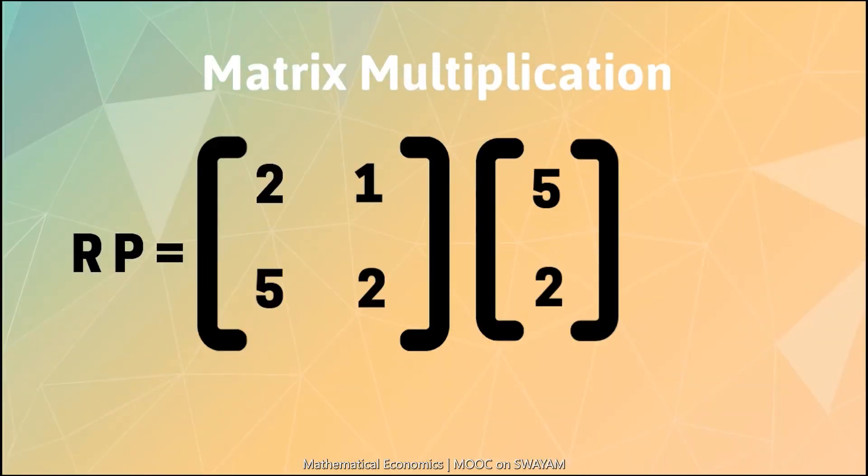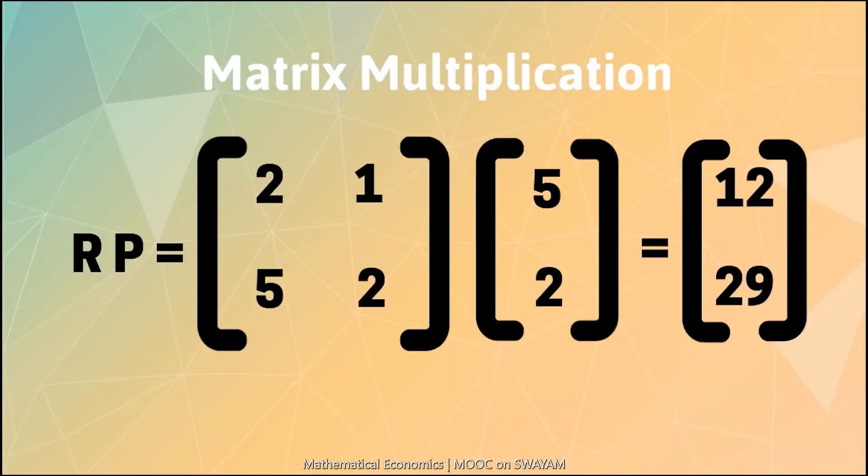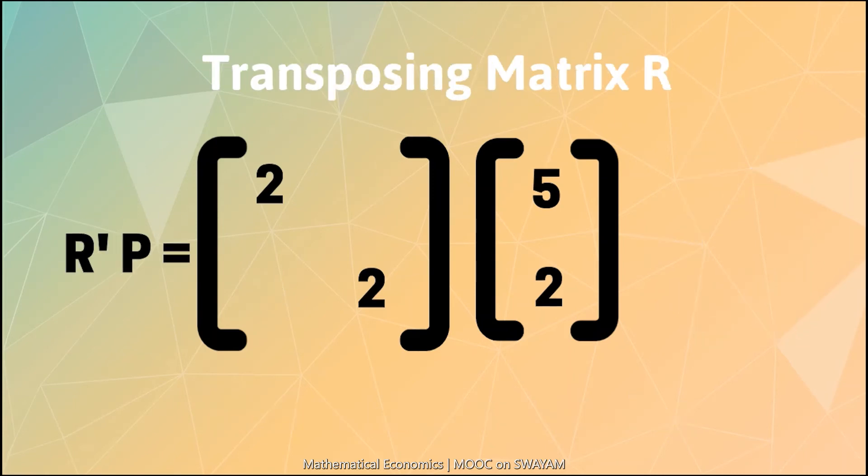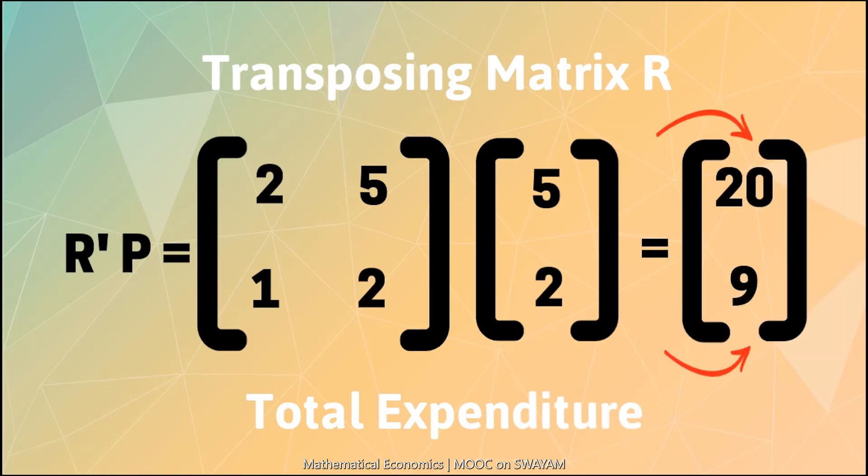Multiplying matrix R by vector P does not have any economic meaning. But if we interchange the rows and columns of matrix R, we get the transpose of R, and then multiplying it with vector P gives R transpose P. This vector gives exactly the values of the expenditure incurred by the woman and the man, and hence has an economic meaning.